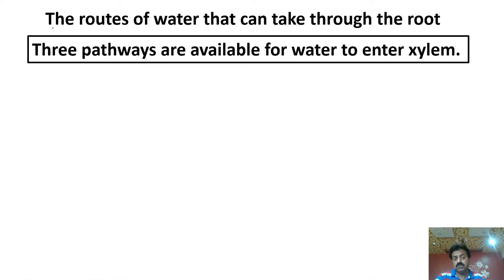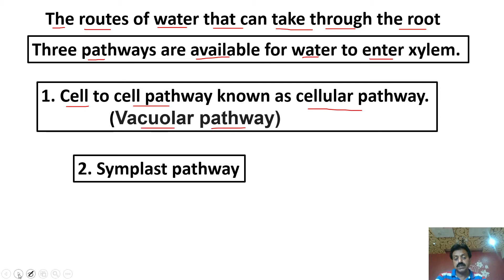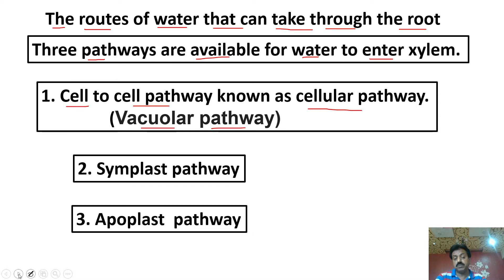کون سے pathways available ہیں for water to take through the root? تین pathways ہمارے textbook میں mention کیے گئے ہیں: پہلا cell-to-cell pathway — also known as cellular pathway یا vacuolar pathway۔ دوسرا symplast pathway۔ اور تیسرا apoplast pathway۔